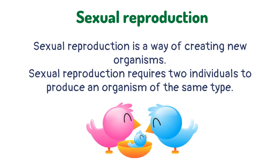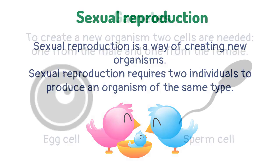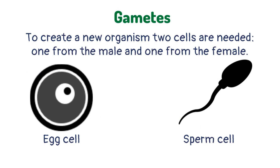Sexual reproduction is a way of creating new organisms. Sexual reproduction requires two individuals to produce an organism of the same type. To create a new organism, two cells are needed — one from the male and one from the female.